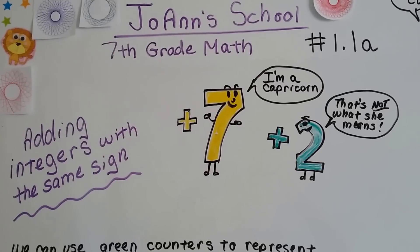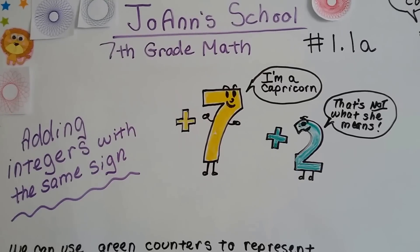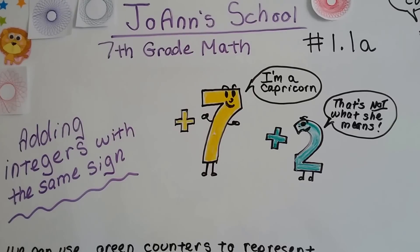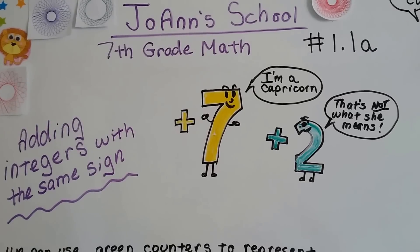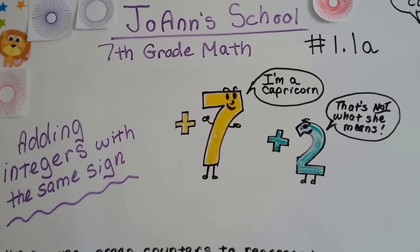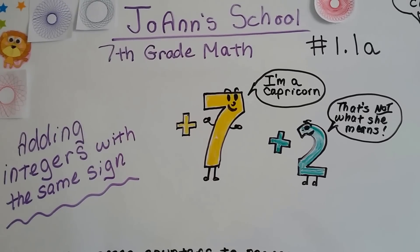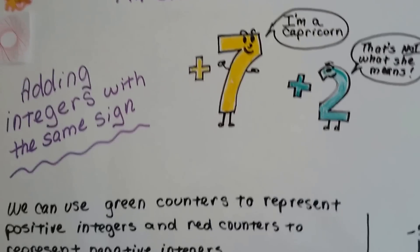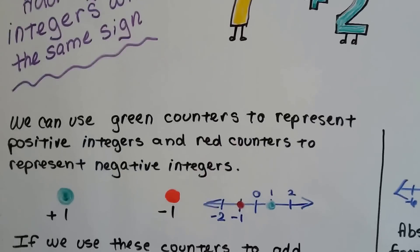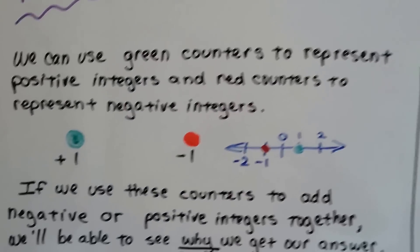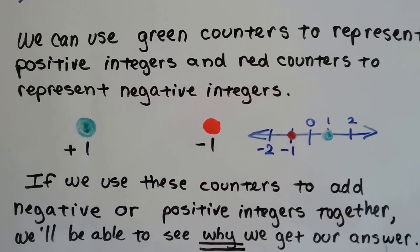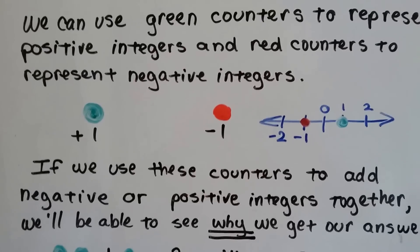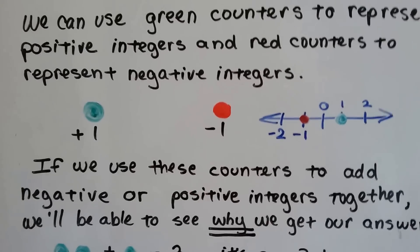Seventh grade math, number 1.1a: adding integers with the same sign. That means adding a positive integer to a positive integer and a negative one to a negative one. We can use green counters to represent positive integers and red counters to represent negative integers.